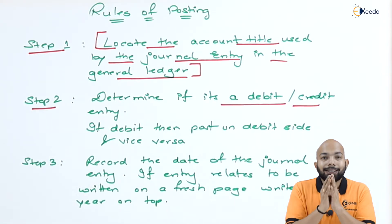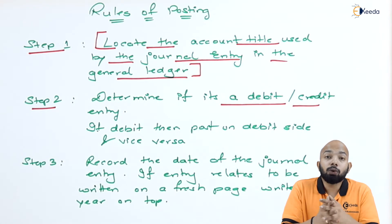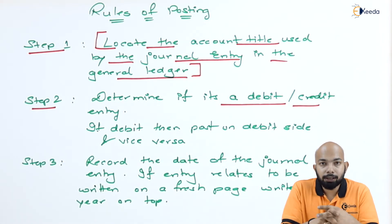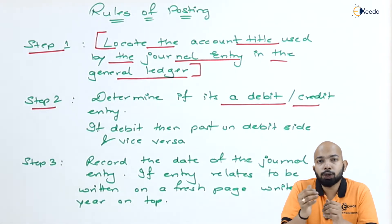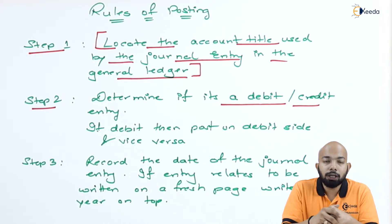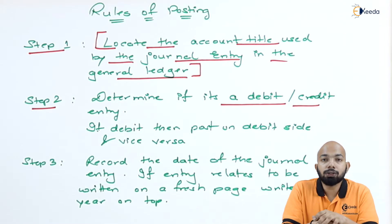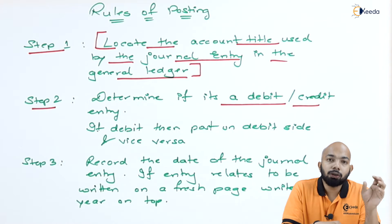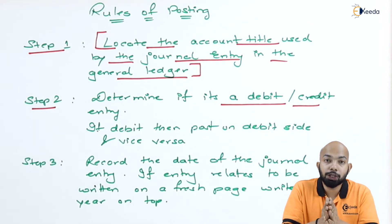The second step is to figure out whether it's a debit entry or a credit entry. If it is a debit entry, it will be mentioned on the debit side of the ledger balance. If it is a credit entry, it will be mentioned on the credit side. For example, if the journal entry states cash account debit to goods account, cash will be mentioned on the debit side of cash account, and goods will be mentioned on the credit side of goods account.